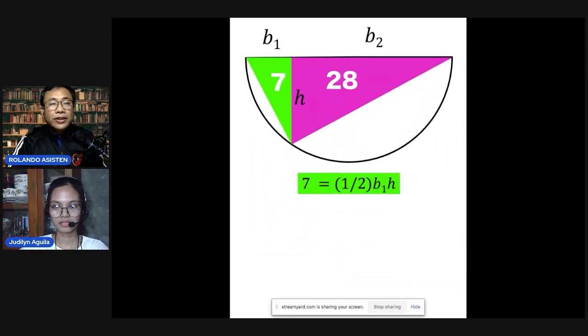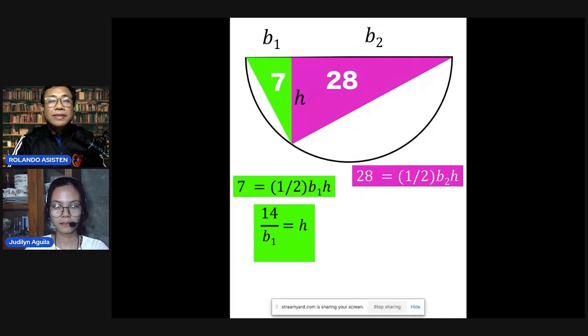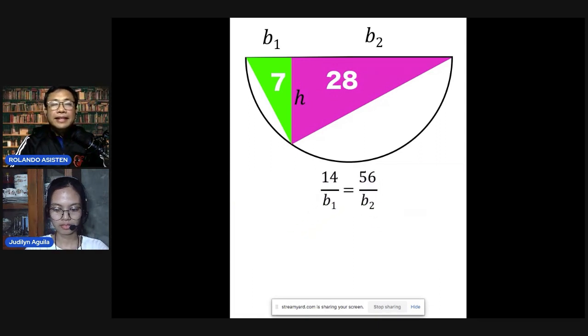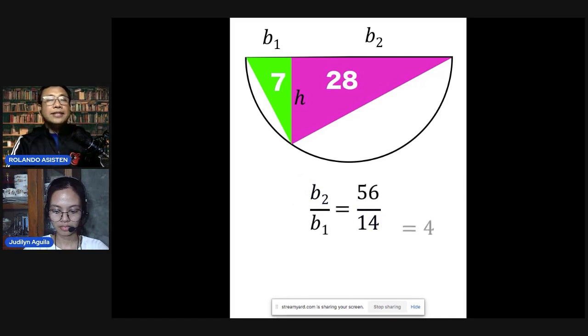Now, let's focus first on the area of the green triangle. Let's solve this for h. So we multiply by 2 to eliminate one half, and we divide by b sub 1. And the right side becomes h. At the left, we have 14 over b sub 1. Next, let's focus ourselves on the area of the pink triangle. Then let's solve this also for h by multiplying by 2 to get 56 and dividing by b sub 2. Now, this h and this h are the same. So that means 14 over b sub 1 must be equal to 56 over b sub 2. Then let's get the ratio of b sub 2 over b sub 1 by multiplying both sides by b sub 2 over 14. Then the left side becomes b sub 2 over b sub 1, and the right side is 56 over 14, which is equal to 4. This means that the ratio of these two bases is 4 is to 1.